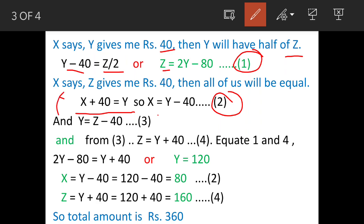And then from this statement only we can say Y = Z - 40, because Z has given 40 rupees to X and then all three of them are having equal money. This is our equation 3.